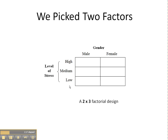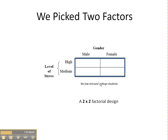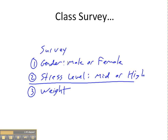Our design in this illustration would have been a 2x3 factorial design: our first variable, gender, had two levels, and our second factor, level of stress, had three levels. However, an initial survey of my students indicated there were no low-stress students — perhaps because finals was approaching — so we went to a 2x2 factorial design: two levels for gender and two levels for level of stress. Our dependent variable was the student's weight.